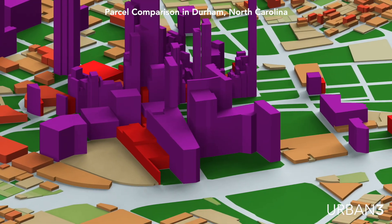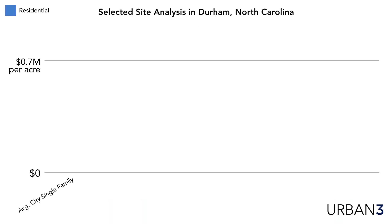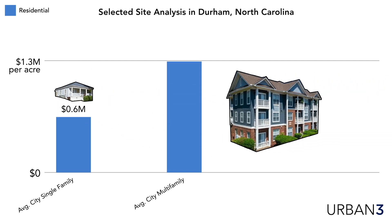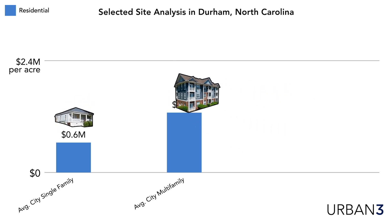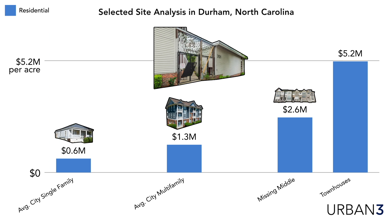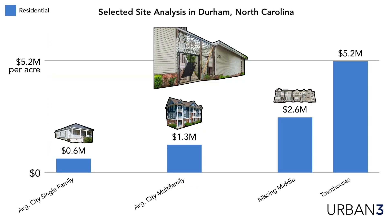Let's look at some examples. The average single-family house in the city is about $650,000 an acre. Multi-family comes in at about $1.3 million — almost double. Missing middle examples are at about $2.6 million per acre. And townhouses are at about $5 million per acre. Townhouses are still a single-family product, yet they're more than five times the value of single-family homes.